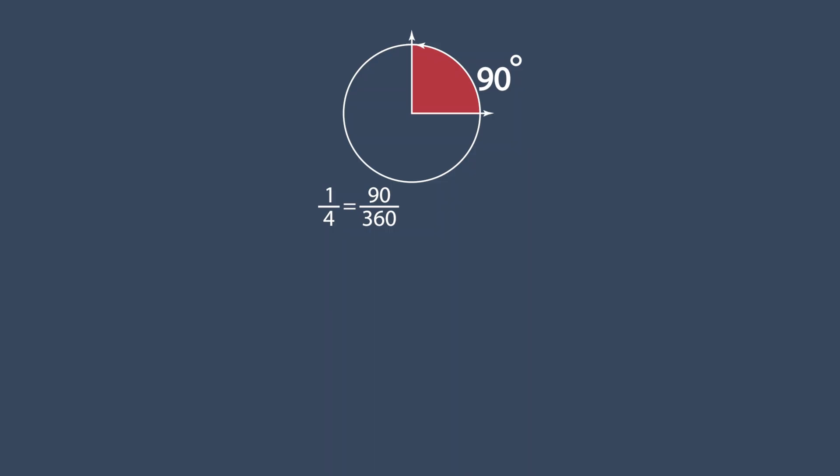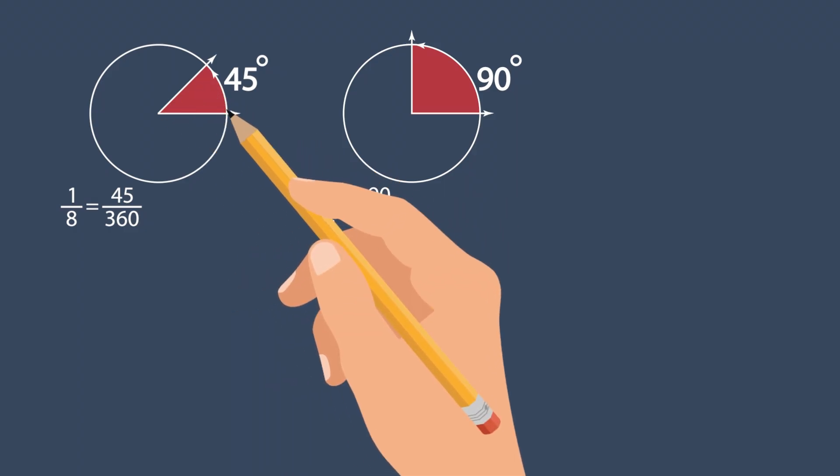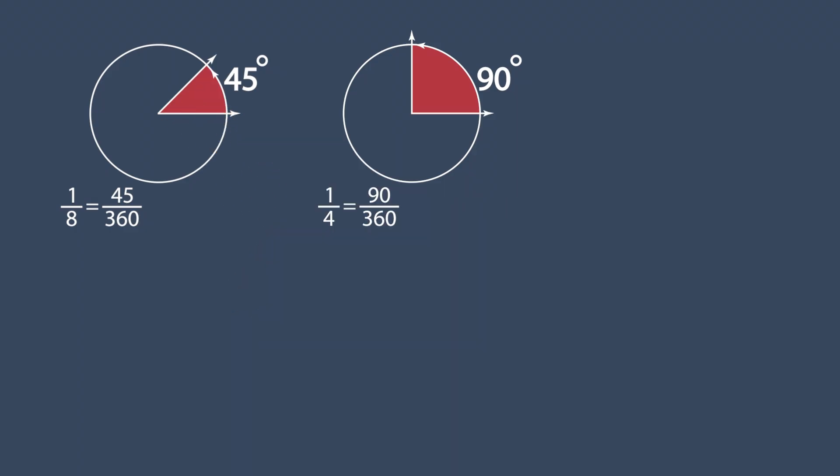Now let's take a look at half of a right angle. Half of a right angle is equal to 1 over 8, like a slice of pizza. 1 eighths is equal to 45 over 360. So the measure of this angle is 45 degrees.